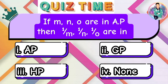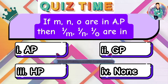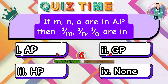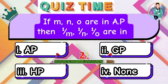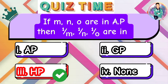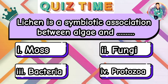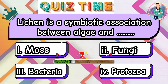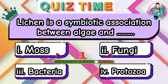If M, N, and O are in AP, then 1/M, 1/N, and 1/O is in? Lichen is a symbiotic association between algae and?